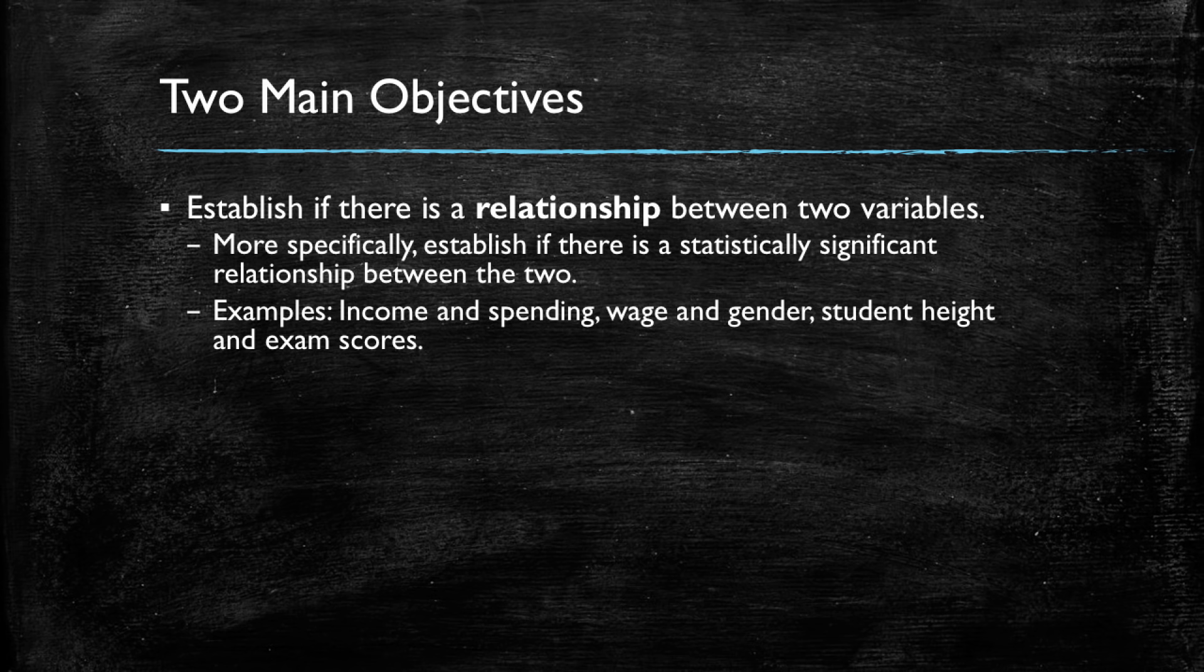We could ask if men are more likely to earn higher wages than women. A case in which we're talking about gender discrimination, which is negative and we don't want it, but we can actually use regression models to test if that relationship exists. Another example that I hope you find odd is the relationship between a student's height and that same student's exam scores. We should expect no relationship to exist, and we can use our regression models to test that.